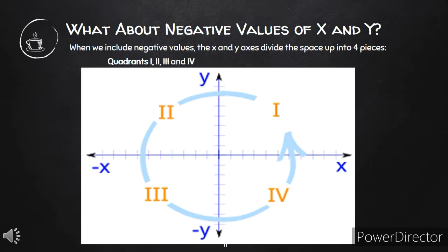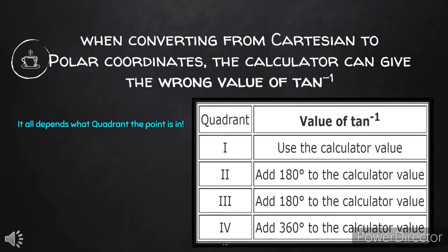What about the negative values of x and y? When we include negative values, the x and y axes divide the space into four pieces — quadrants 1, 2, 3, and 4 in a counterclockwise direction. These become the basis in converting polar to Cartesian coordinate and vice versa. When converting, we might calculate the wrong value of θ, so it depends on what quadrant the point is in. If it is in quadrant 1, we use the calculated value. If it is in quadrant 2 and 3, we add 180 degrees to the calculated value. If it is in quadrant 4, we add 360 degrees to the calculated value.